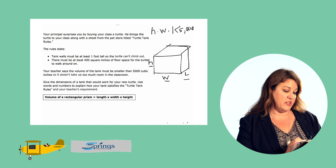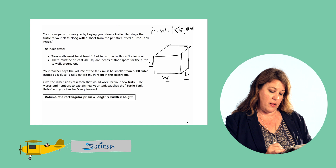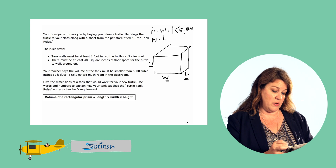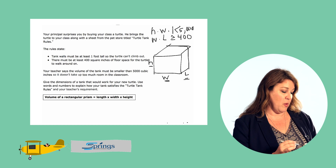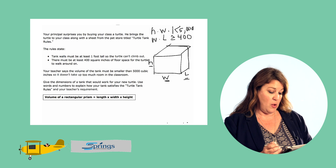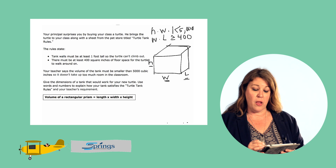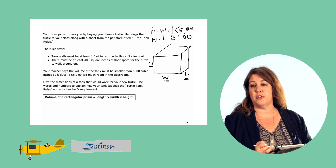It also says there needs to be at least 400 square inches of floor space for the turtle to walk around on. So the floor space is our width times our length. The width times the length has to be equal to or greater than 400 square inches. And the walls must be at least a foot tall. So let's start with the width times the length — we'll design our floor first. We need two numbers we can multiply together that equal or exceed 400.